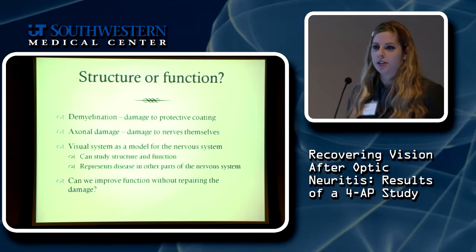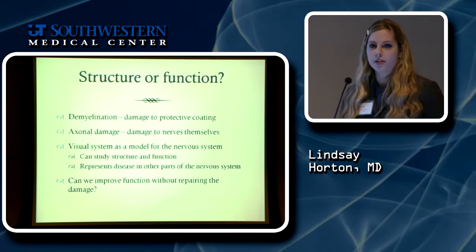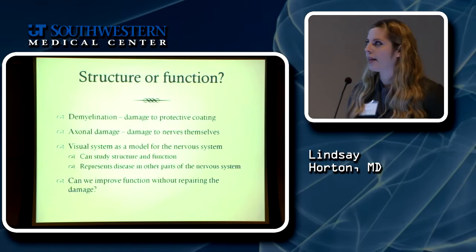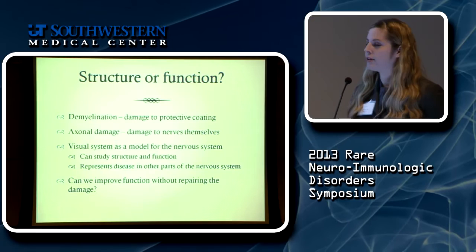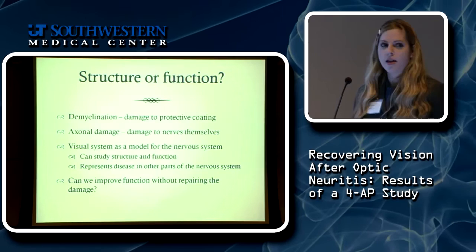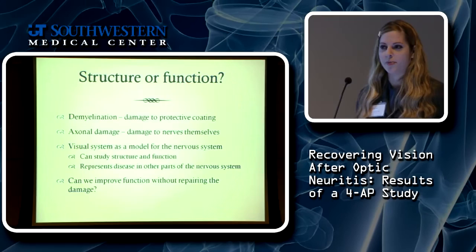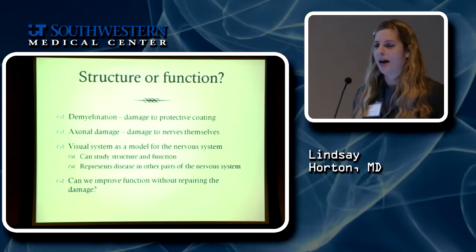There are two types of damage that interfere with nervous conduction. You can have demyelination — damage to the protective coating around the nerves. Think of the nerves like wires surrounded by insulation: the nerves are called axons and the insulation is called myelin. You can damage that coating, which interferes with conduction, or you can damage the actual nerves themselves. As you'd imagine, damaging the nerves leads to more severe damage than just damaging the coating.